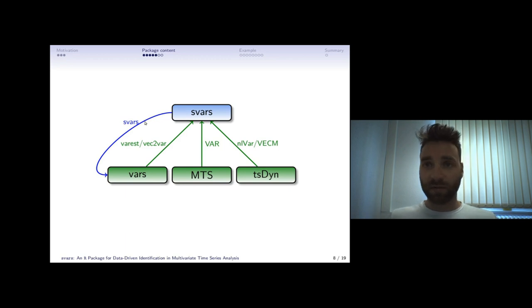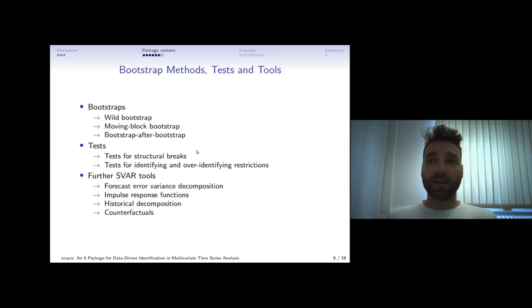This is how the svar package fits into the R world, we did not re-implement the reduced form estimation but just built it upon the pre-existing packages. Besides these identification models we deliver a whole toolbox of different bootstrap techniques, tests on identifying or over-identifying restrictions, and some popular svar statistics like counterfactual historical decomposition.